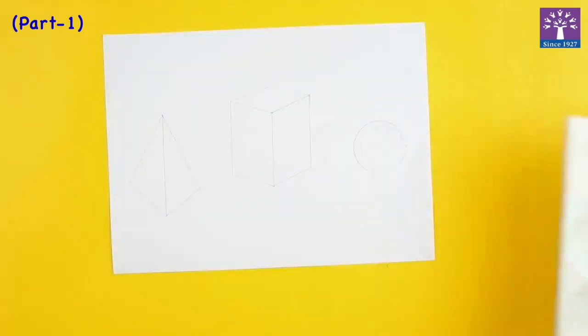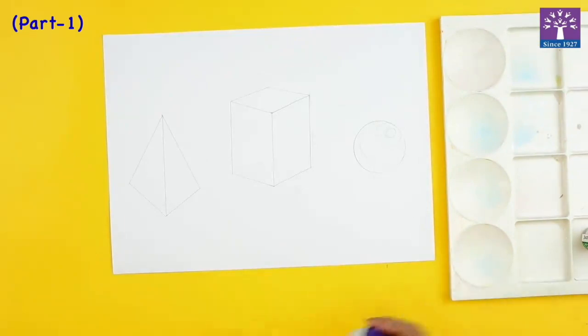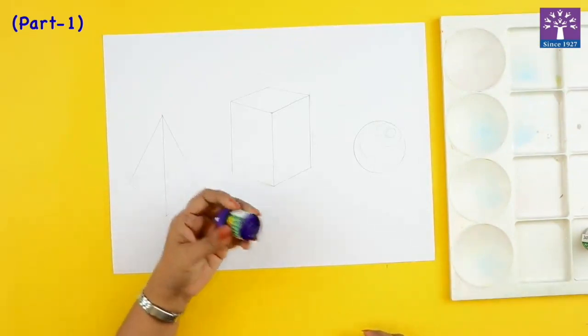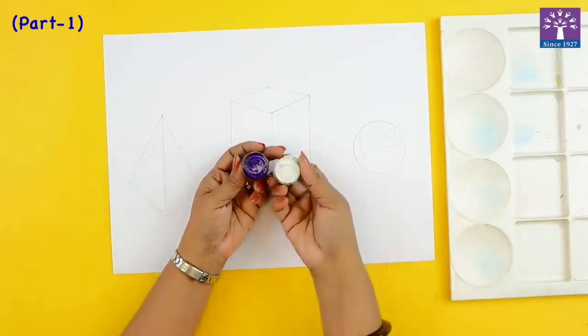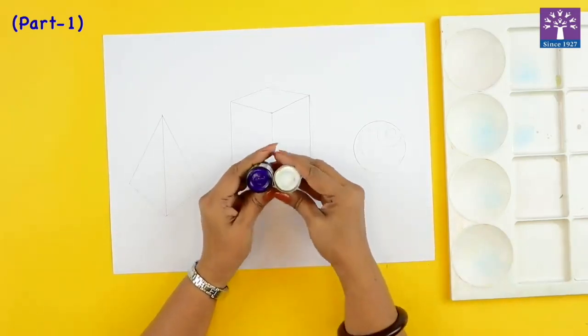We are going to learn to paint these shapes with tints and shades. Now tint is created out of a paint. Like for example if I'm taking a purple color and I'm adding white in that, I'll keep on adding white. I'll get a tint of this purple color.